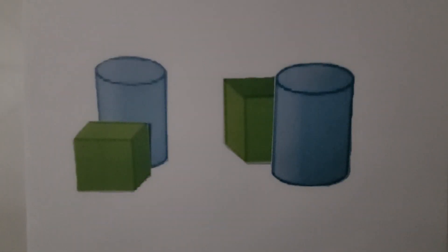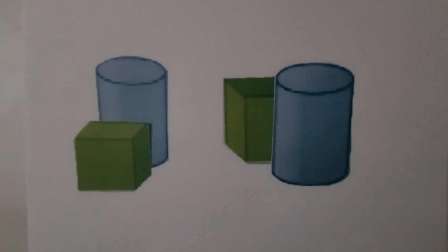Here we have cubes and cylinders. We need to put an X on the cube that is in front of a cylinder. Do you see a cube that is in front of a cylinder?